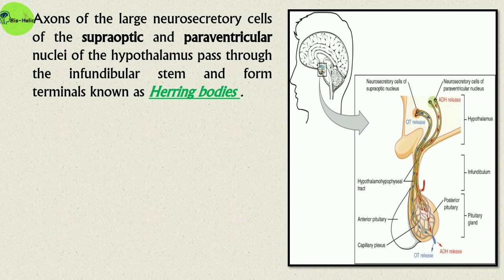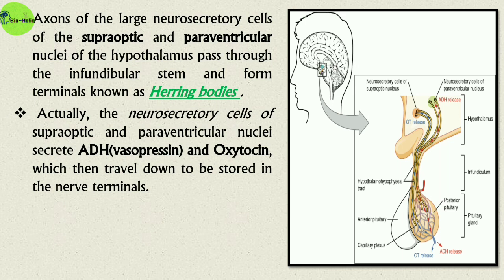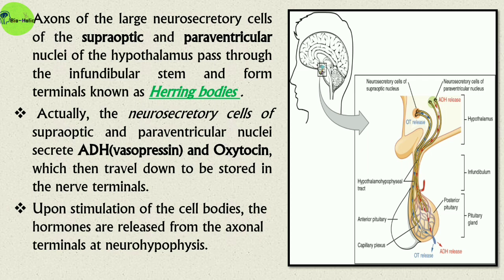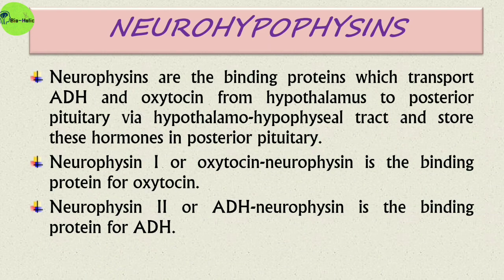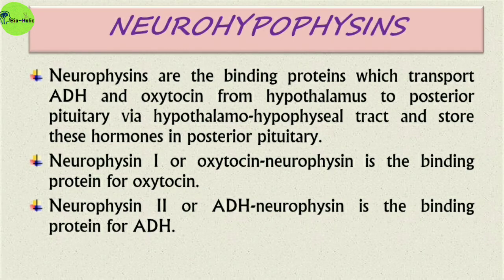The axons of large neurosecretory cells of the supraoptic and paraventricular nuclei of the hypothalamus pass through the infundibular stem and form terminals known as Herring bodies. The neurosecretory cells of these nuclei secrete ADH and oxytocin, which travel down to be stored in the nerve terminals at the posterior pituitary. Upon stimulation of the cell bodies, the hormones are released from the axonal terminals of the neurohypophysis. Neurophysins are binding proteins that transport ADH and oxytocin from the hypothalamus to the posterior pituitary via the hypothalamus-hypophysial tract. Neurophysin 1 (oxytocin-neurophysin) binds oxytocin, and neurophysin 2 (ADH-neurophysin) binds ADH.